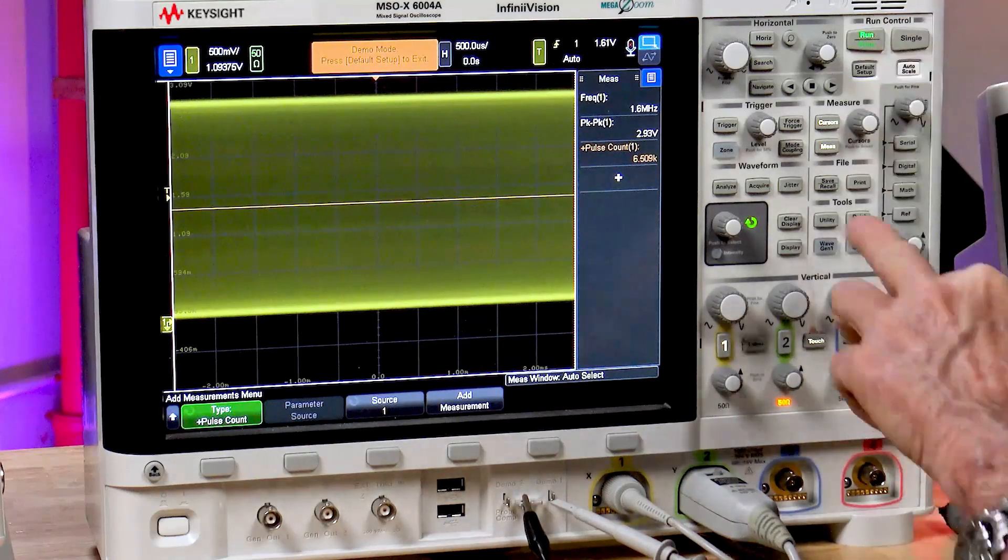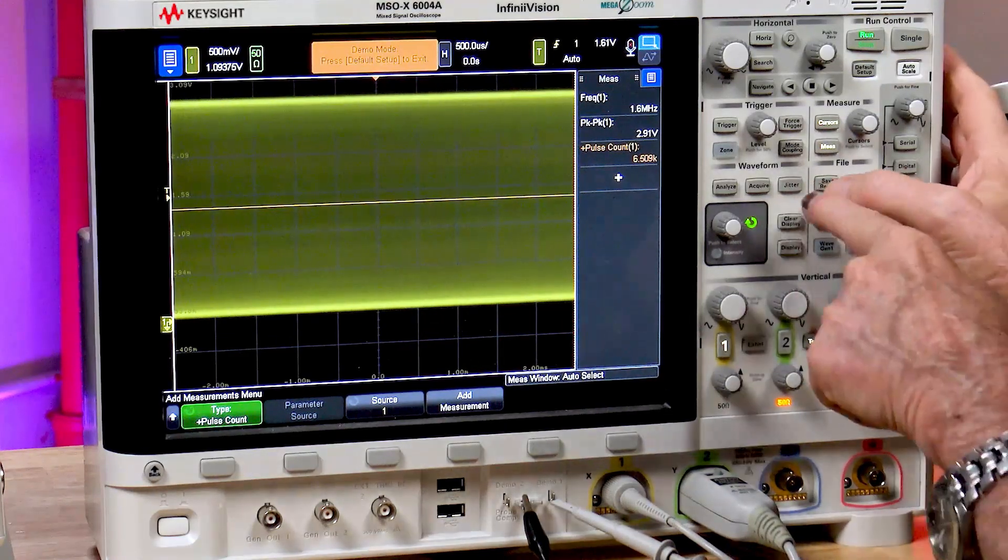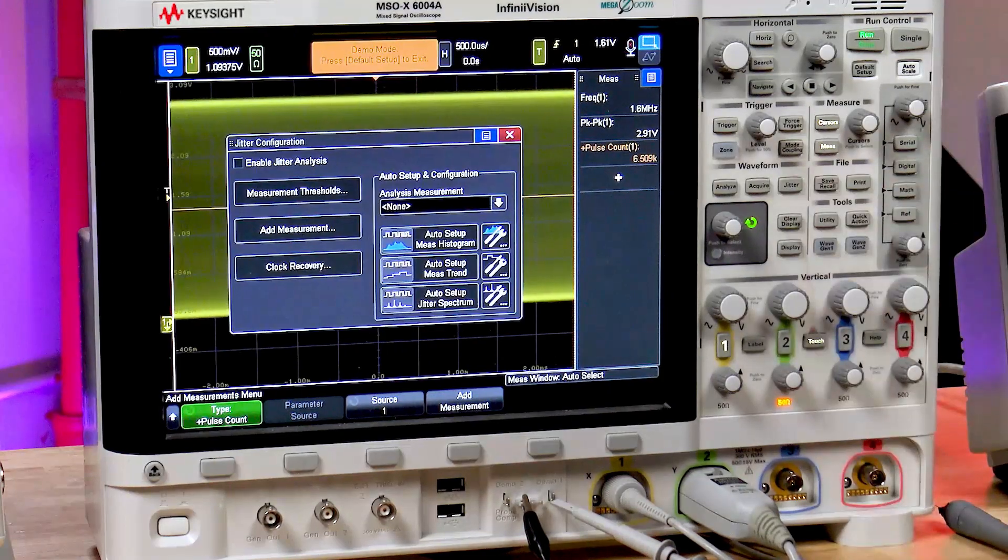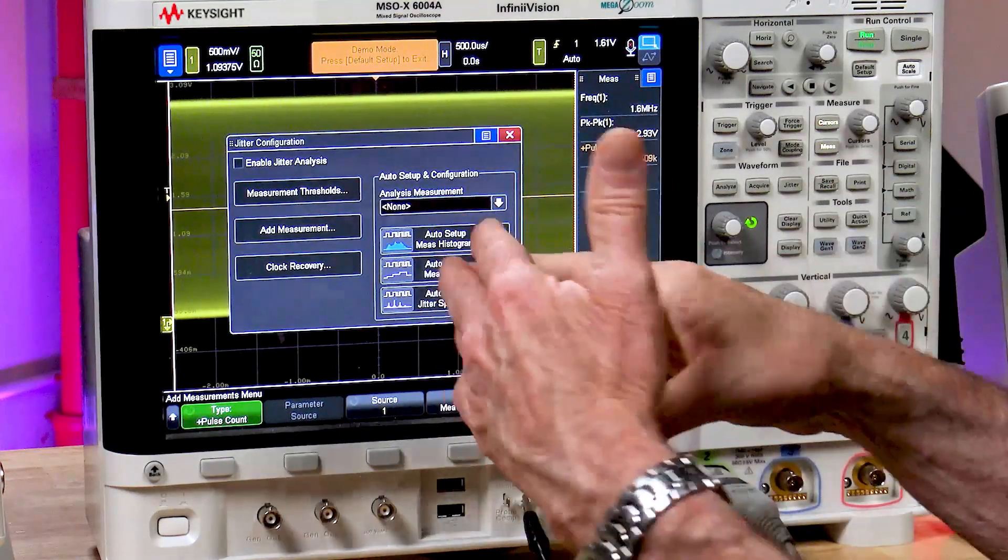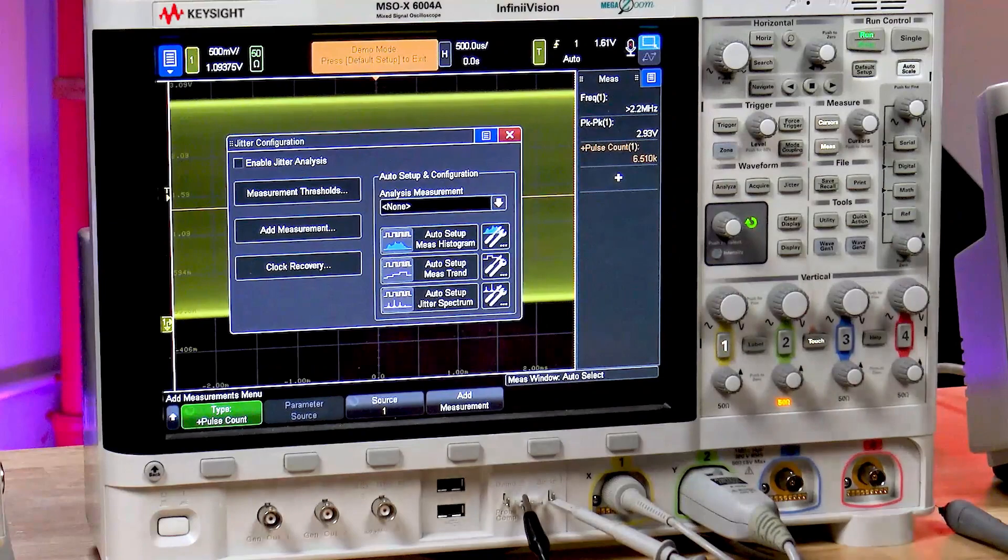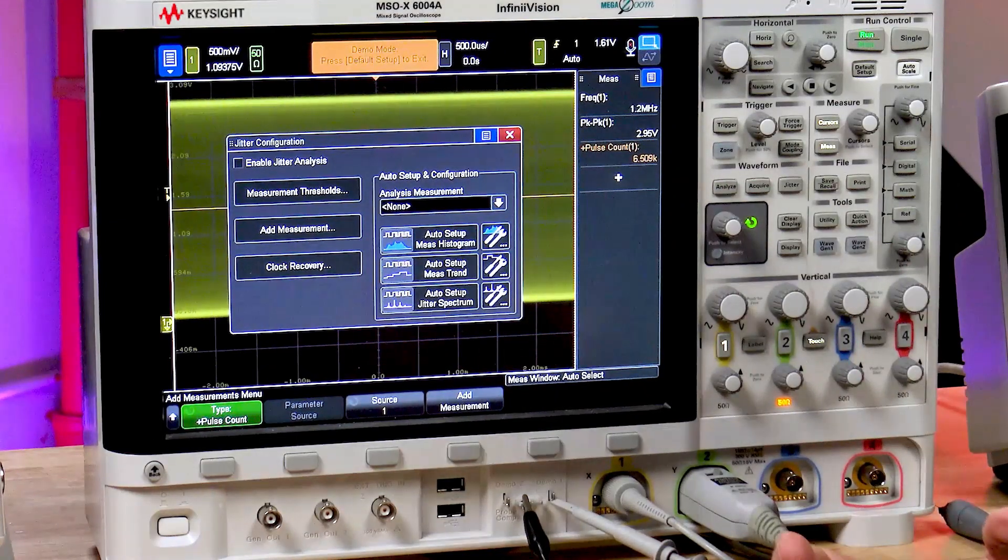So let's go into the jitter menu. There's a dedicated key on the front panel says jitter. And then this is called the jitter wizard. It assists you in setting up a jitter measurement.